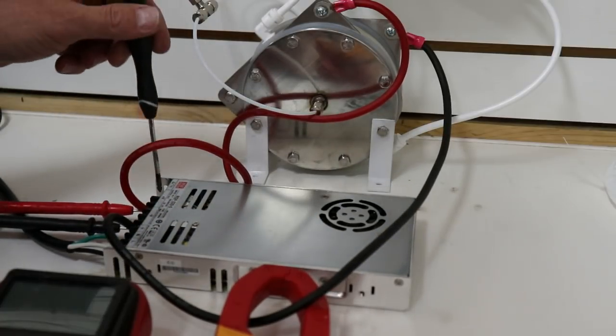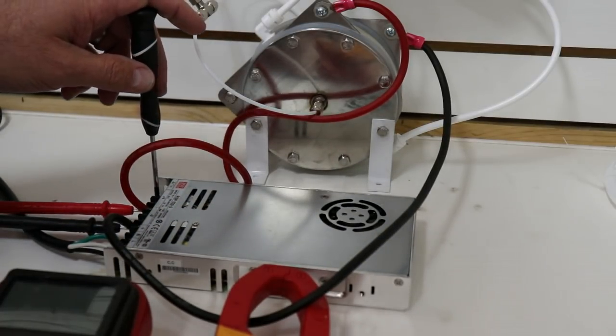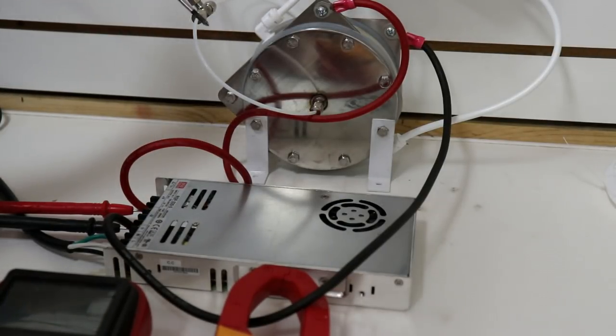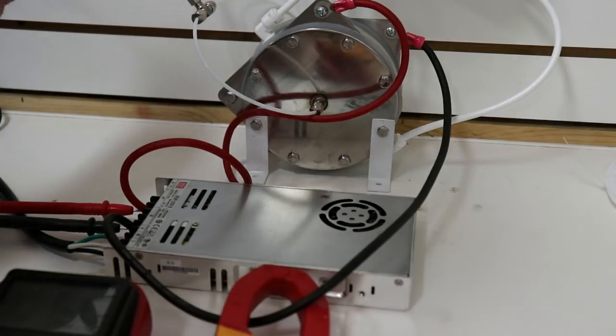If you turn it counter-clockwise, it'll lower the voltage, which will lower the output of the generator. If you turn it clockwise, it'll raise the voltage and raise the output of the generator.